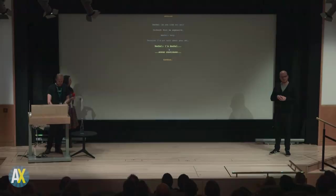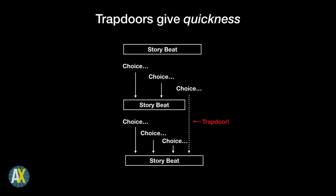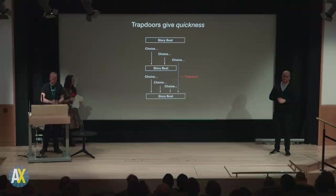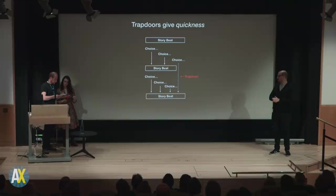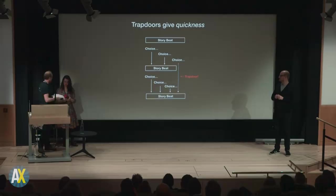That last one was an example of what I call a trap door. Trap doors are really useful. A trap door is a choice that says 'I'm just going to skip you forward here' — we're not really changing the overall structure of the scene, we're just saying let's get on with it. Trap doors move you forward, push you along, and are very easy to add in.